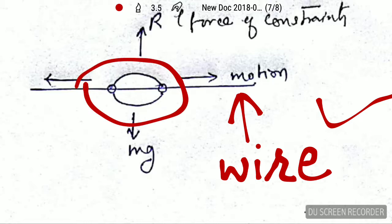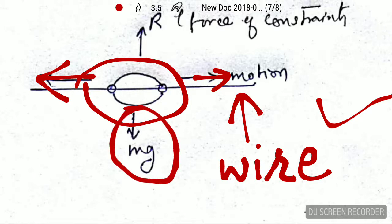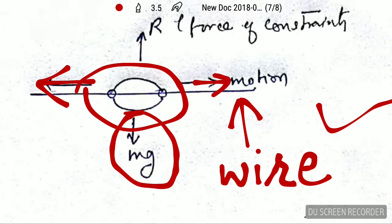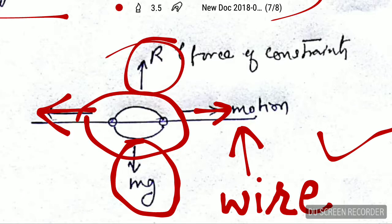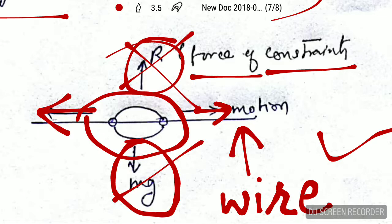Now this bead can have motion along this direction because the wire is straight. The bead cannot go up and down. If the bead tries to go down due to its weight, the wire will exert a reaction force. So this R is nothing but the force of constraint, and this will completely cancel out each other. Hence the bead will only move in the forward or backward direction.